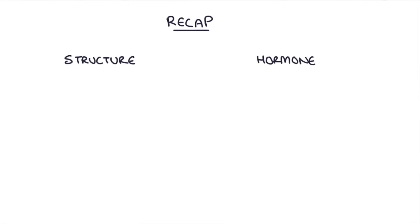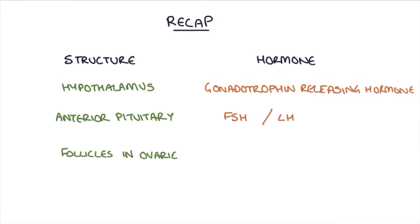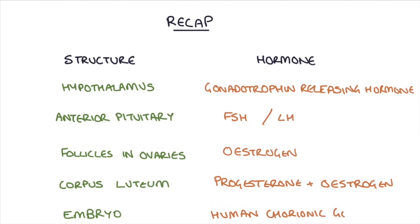To recap where the hormones come from: the hypothalamus releases gonadotrophin-releasing hormone; the anterior pituitary releases FSH and LH; the developing follicles in the ovary release estrogen; the corpus luteum releases progesterone and estrogen; and if the egg is fertilized, that embryo will release human chorionic gonadotrophin, or HCG.